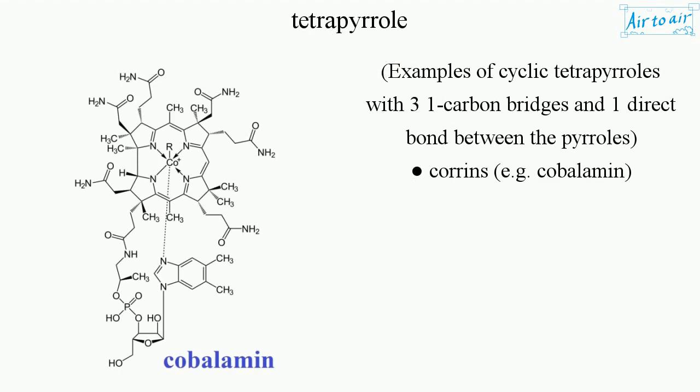Examples of cyclic tetraphols with three one-carbon bridges and one direct bond between the pyrroles include corrins, e.g. cobalamin.